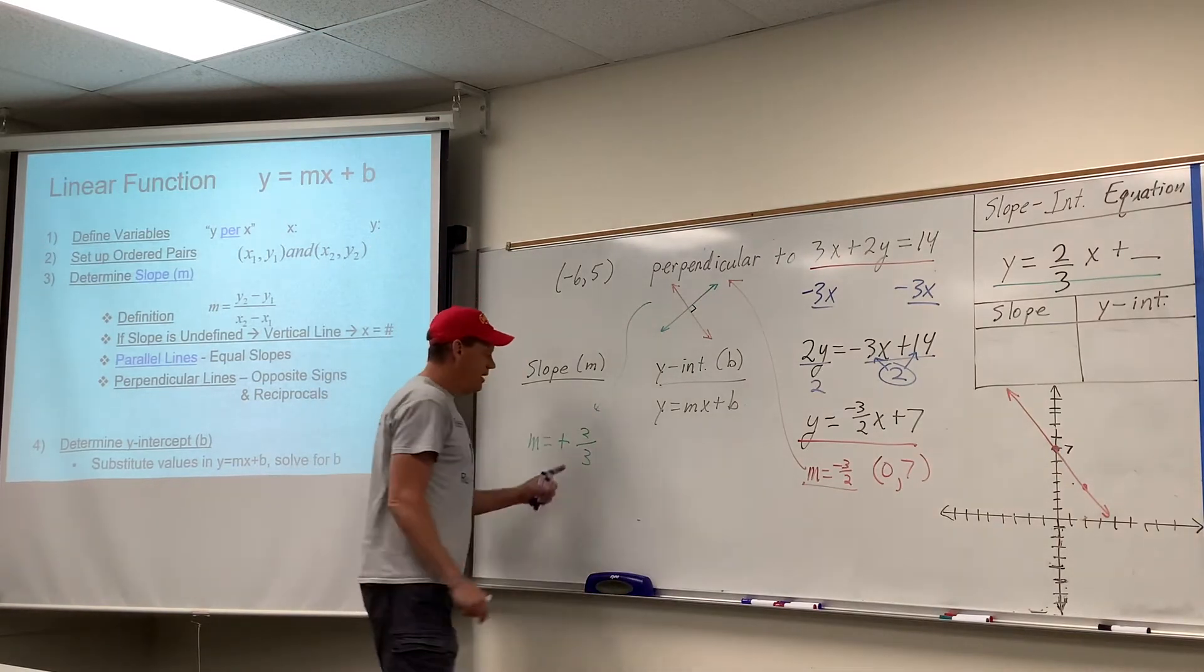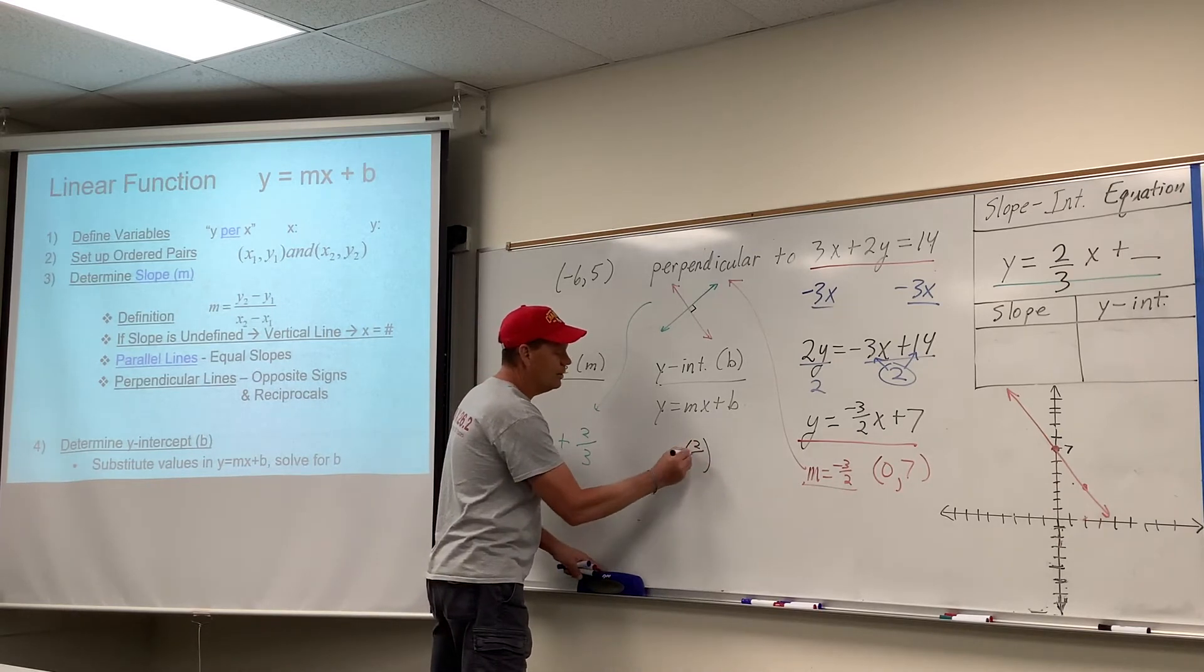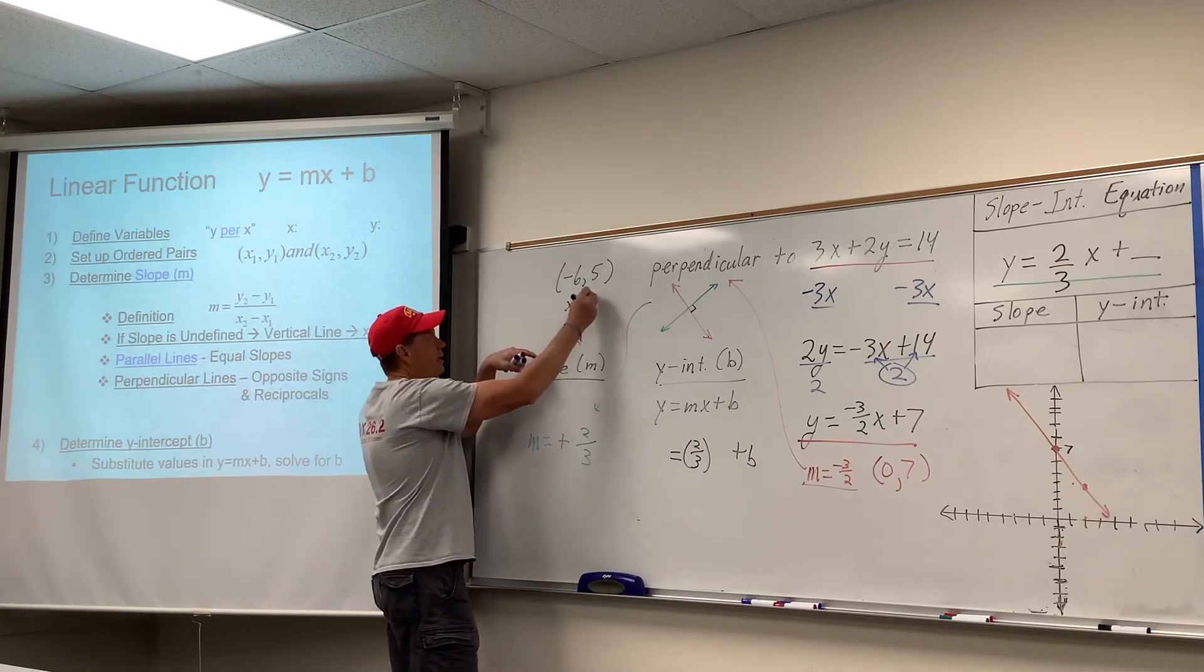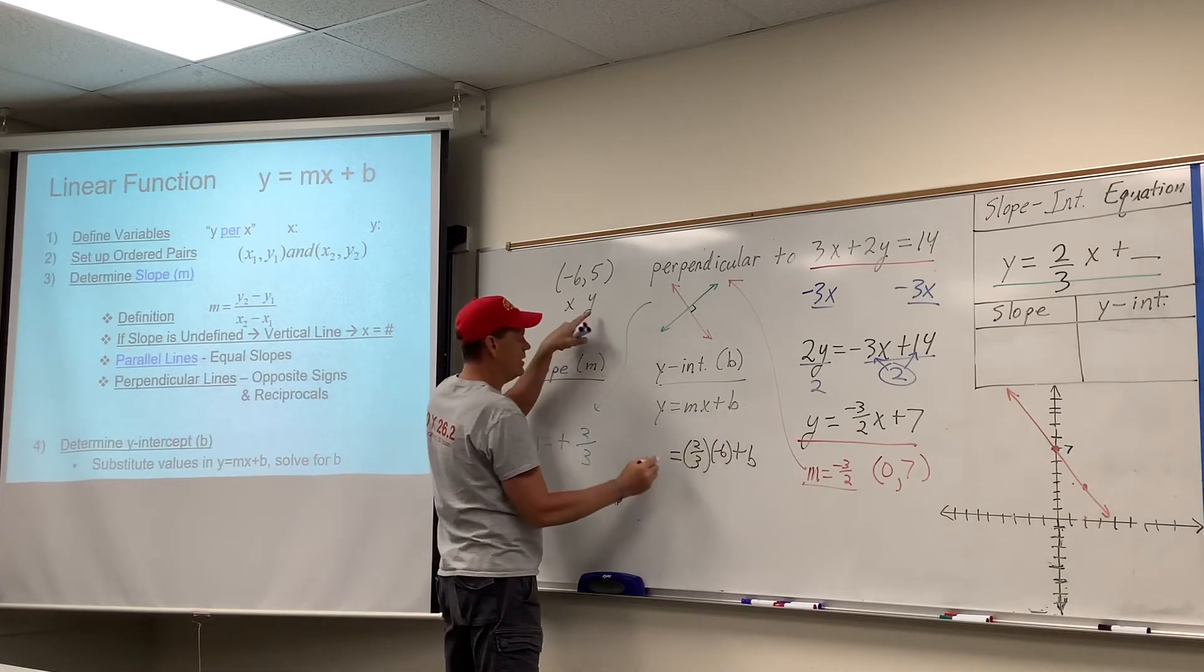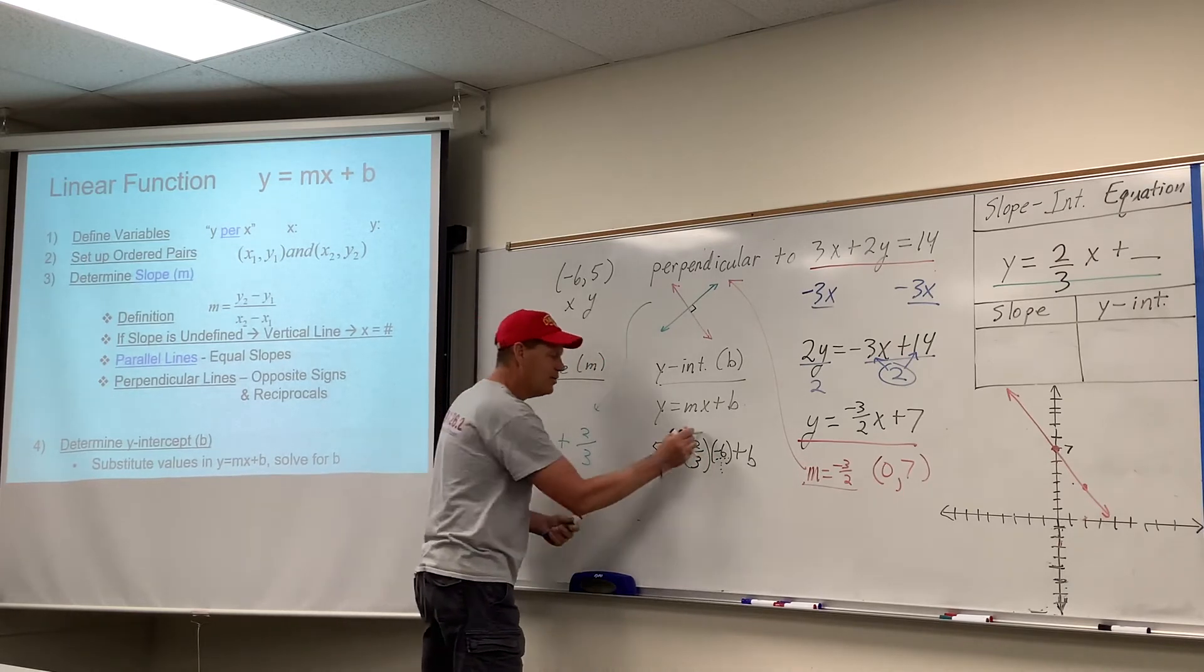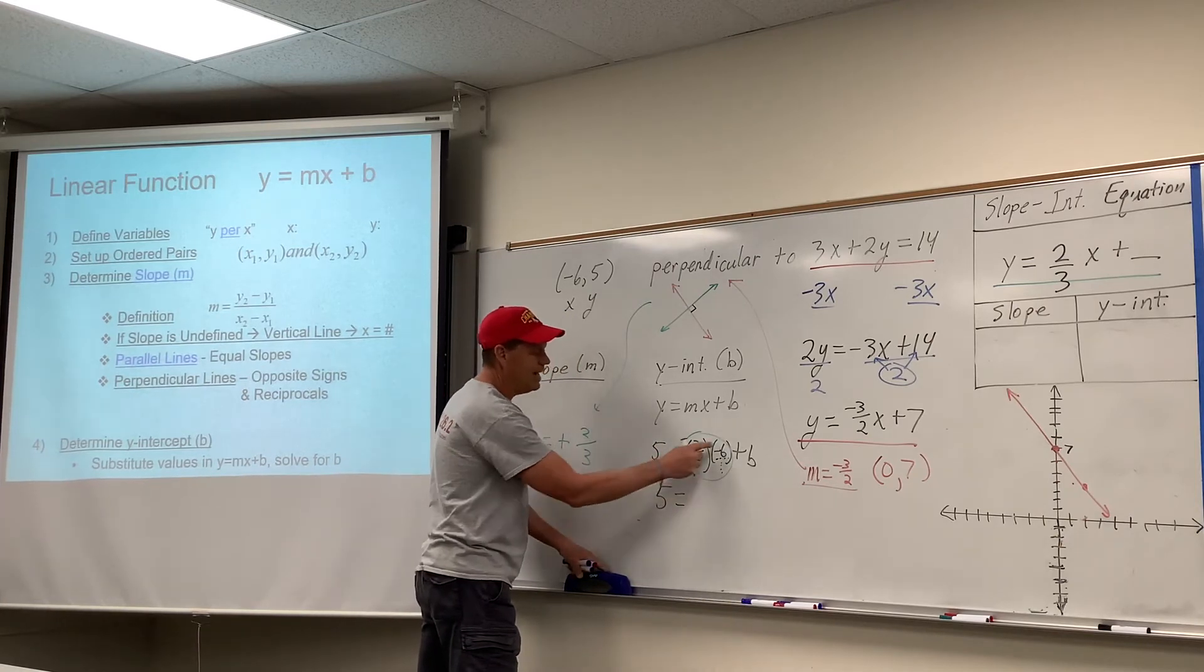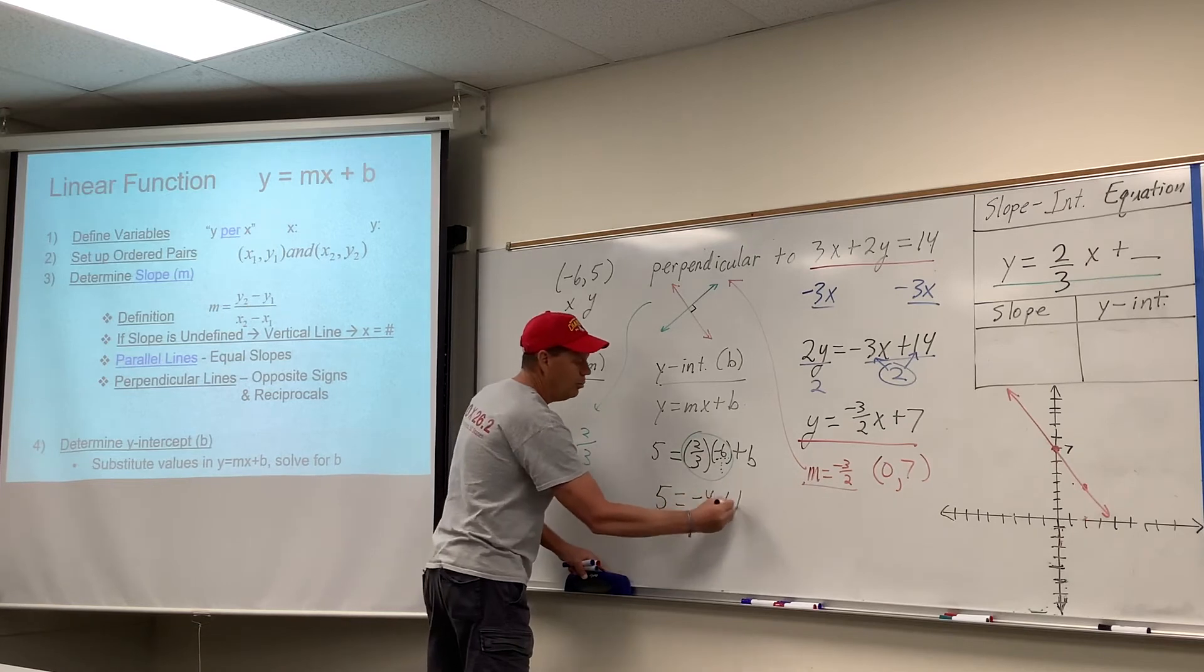So this green line better have a slope of 2/3. And so that's 2/3. And then, like we've been doing, let's use this ordered pair for the x and the y. And so x is -6 and y is 5. And -6 is -6. So when we multiply these two numbers, that's arithmetic. That would be -12 divided by 3. 3 times 1. -12 over 3. -12 divided by 3 is -4 plus b.